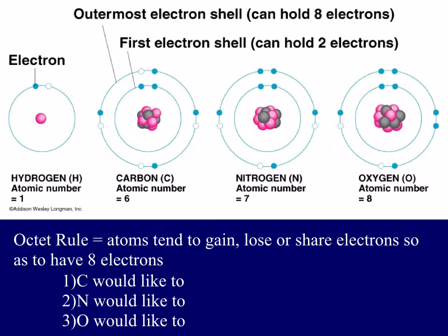So the octet rule means we want eight electrons. So if we look at the pictures here, carbon has four electrons on the outside so we need to gain four electrons to get to eight. Now let's look at nitrogen. N has one, two, three, four, five valence electrons on the outside and it has space for three more. So N would like to gain three electrons. Notice how both of these are non-metals and they're gaining electrons. Oxygen has six electrons on the outside so it has space for two.